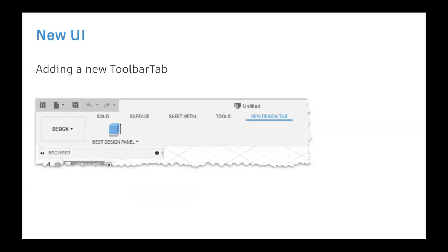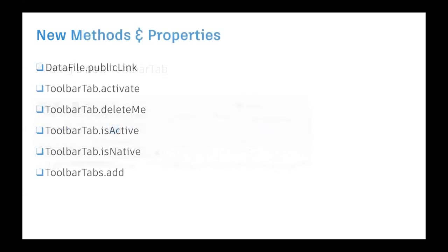To update the API so that add-ins can add a new tab into an existing workspace, a few APIs are provided: Toolbar Tab, Activate, Delete Me, Is Active, Is Native, and Add. It is similar to adding a panel into a workspace. You can use Add Tab to add a new tab into an existing workspace. Is Native distinguishes between add-in tabs and Fusion UI native tabs. Is Active Tab tells you whether the current tab is active or not.